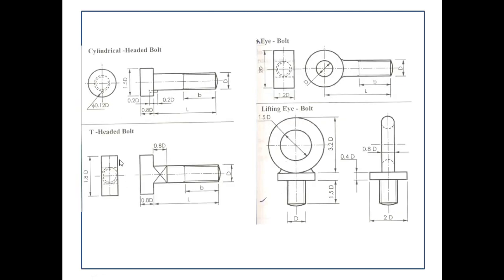The cylindrical headed bolt has a cylindrical head, and by using a pin — half inserted into the head and half into the adjoining element — a locking condition is created. The T-headed bolt is similar to the cup headed bolt but has a rectangular head that locks into a particular slot. The eye bolt has a circular ring at the end and is used for lifting applications — for example, lifting an electric motor. The dimension varies based on the load condition.